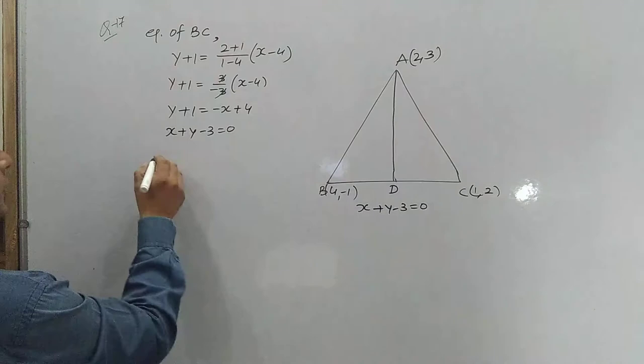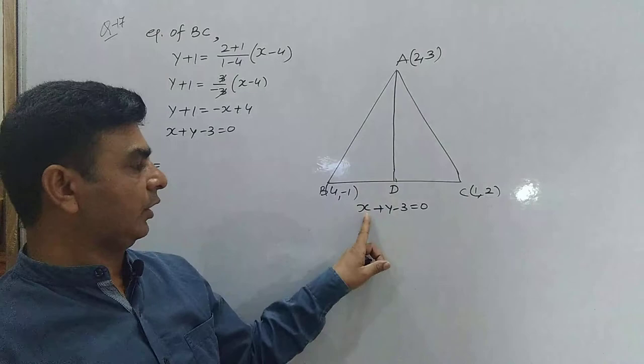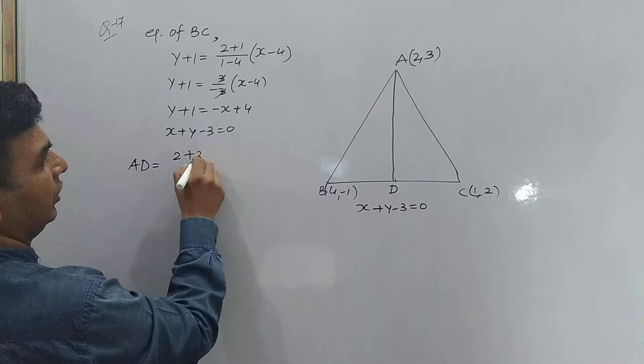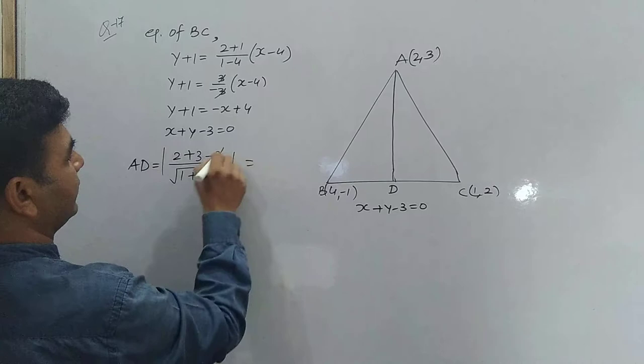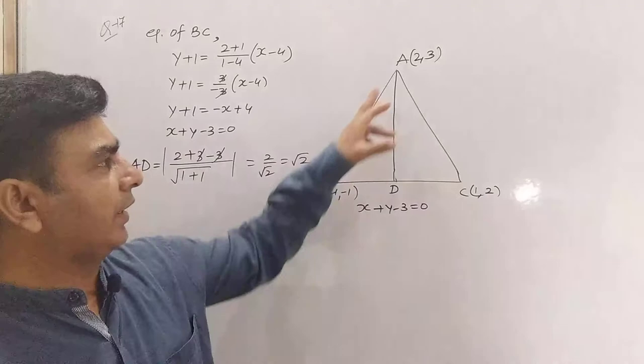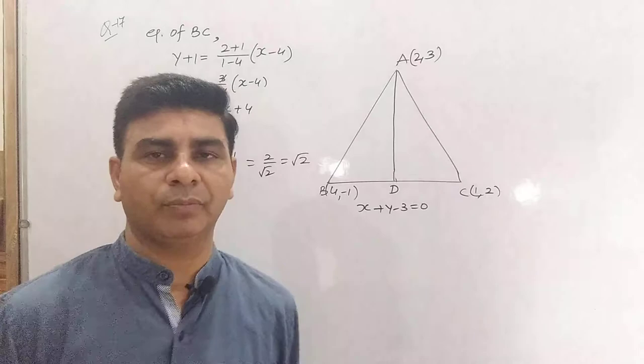With point A given, the altitude AD is found using the distance formula: a·x₁ + b·y₁ + c over √(a² + b²). The coefficient of x is 1, multiplied by 2; the coefficient of y is 1, multiplied by 3; minus 3; over √(1 + 1). This gives us 2 / √2 = √2. So the length of altitude AD is √2.